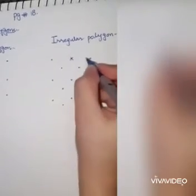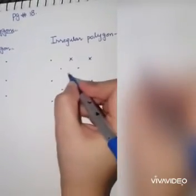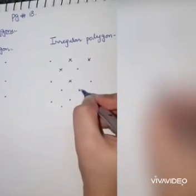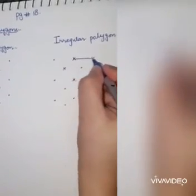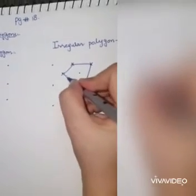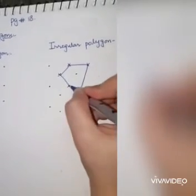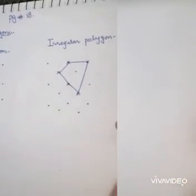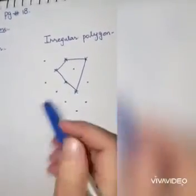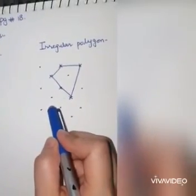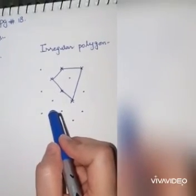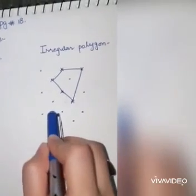Mark vertices four and five, then join them. The sides do not cross each other, and the angles and sides are also not equal — so it is an irregular pentagon.